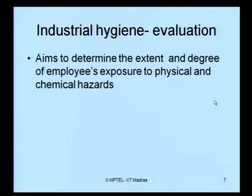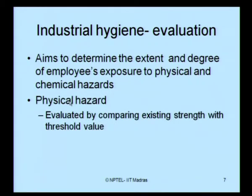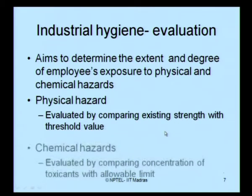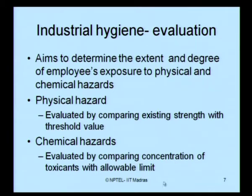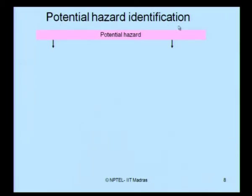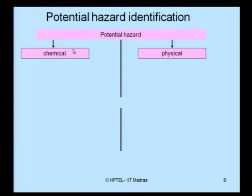Evaluation aims to determine the extent and degree of employees' exposure to physical and chemical hazards. Physical hazards are evaluated by comparing the existing strength with a threshold value, whereas chemical hazards are evaluated by comparing the concentration of toxicants with allowable limits. Potential hazards can be broadly classified into chemical hazards and physical hazards.